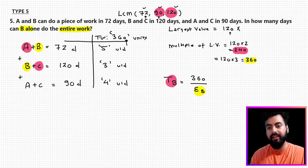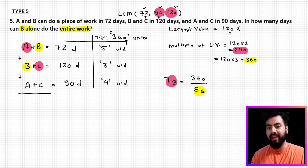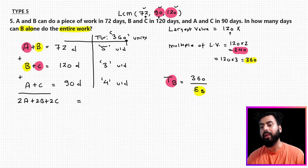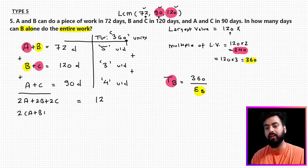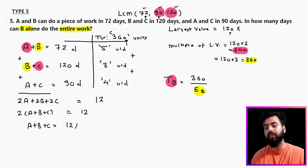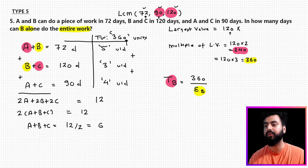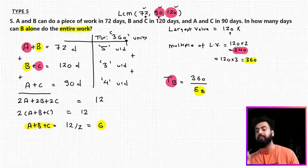If I simply add all three efficiency expressions — (A+B) + (B+C) + (A+C) — each variable appears twice. So I get 2A + 2B + 2C = 5 + 3 + 4 = 12. Dividing by 2, the combined efficiency of A, B, and C is 6 units per day. This is a very important result: if all three work together, they complete 6 units per day.